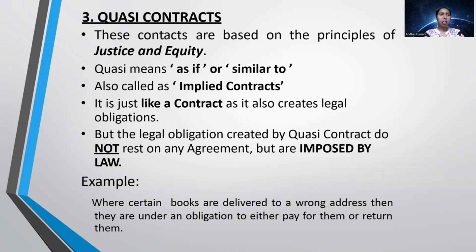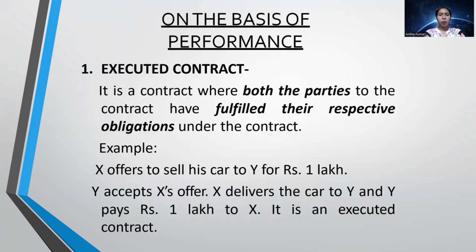Another example: in an apartment, two people named Kumar are staying — one on the ground floor and another on the fourth floor. A courier meant for the fourth floor Kumar is wrongly delivered to the ground floor Kumar. After some time, the ground floor Kumar realizes the courier doesn't belong to him. Even though there is no contract between them, due to quasi-contract principles, the ground floor Kumar will hand over the courier to the fourth floor Kumar or return it to the courier office.